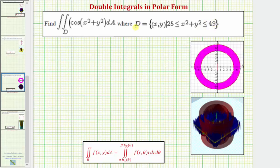Which means the region of integration would be the area in the xy plane bounded by these two circles, where they're both centered at zero. One has a radius of five, the other has a radius of seven.